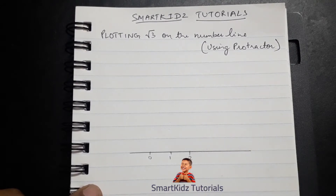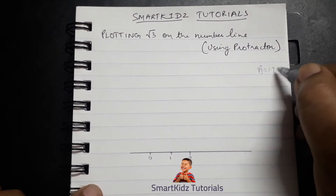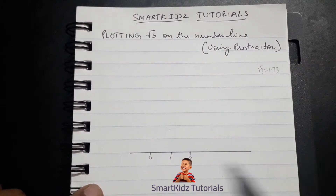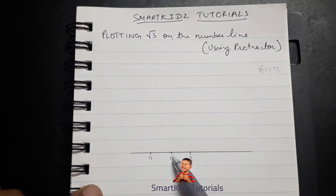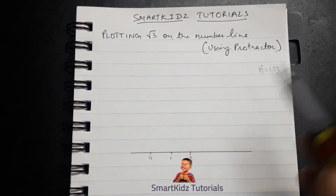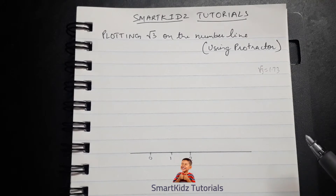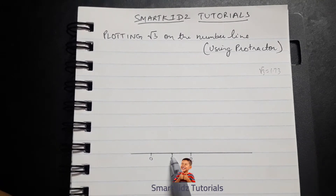Remember, the value of root 3 comes to something around 1.73, which means it has to be slightly greater than the 1.44 that we got for root 2. So let us construct root 2 first and then we'll move to the construction of root 3. For root 2 we'll take one unit and then draw the perpendicular using our protractor.